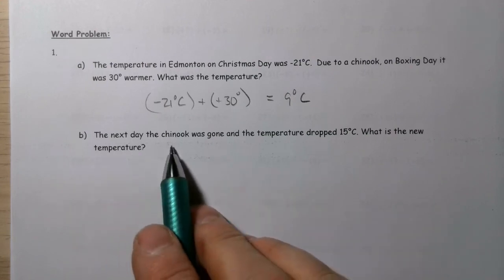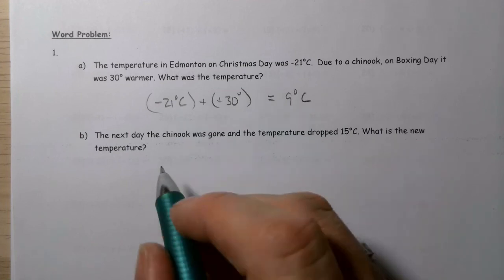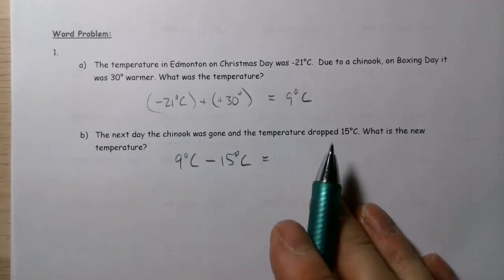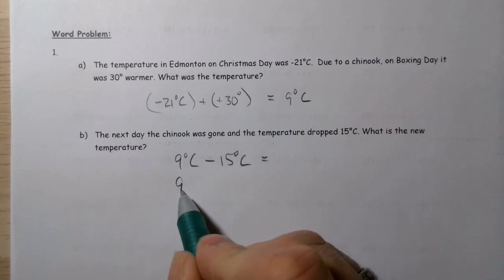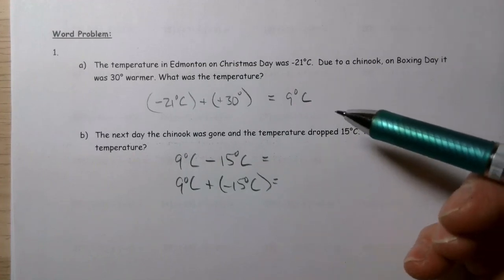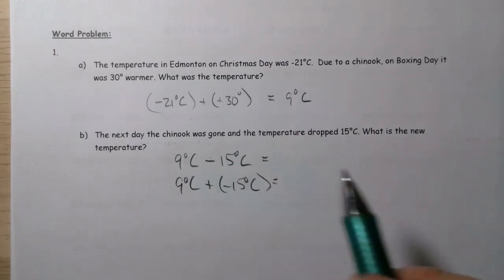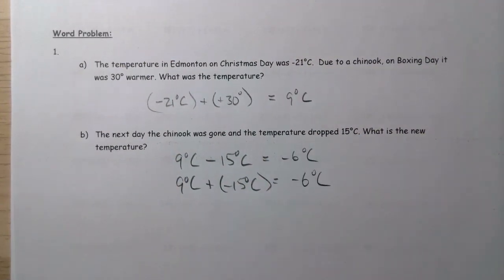The next day the Chinook was gone and the temperature dropped 15 degrees Celsius. So we start at nine degrees and subtract 15: nine plus negative 15. Going from nine to the left — nine steps get me to zero, then six more steps gives negative six degrees Celsius. I hope this overview helps you get comfortable with adding and subtracting integers. Thank you.